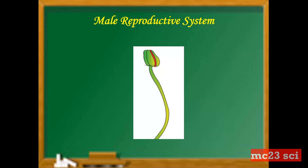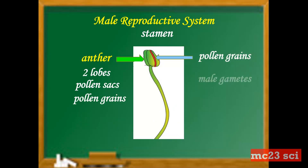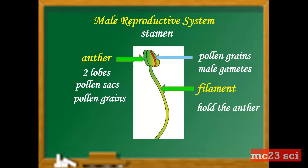The male reproductive system — this is the stamen. In the stamen, it consists of the anther. The anther has two lobes that contain the pollen sacs. The pollen sacs have pollen grains, also called the male gametes. And the last part is the filament, which holds the anther and is tall enough to release the pollen.